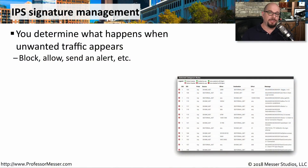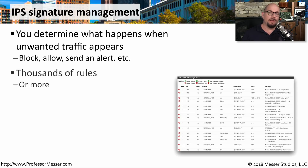If you have an intrusion prevention system on your network, then you're probably familiar with the management of those signatures. There are many different signatures, and each one will have a different disposition. You get to decide what happens if any of these signatures happen to match the traffic going through your network. Do you block the traffic or allow the traffic? Do you also send an alert, or does the message simply show up in your logs? There are thousands of different rules in an IPS, and you'll need to determine what the outcome is for every single one of those rules.